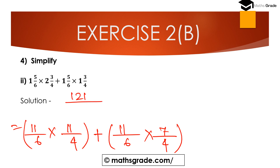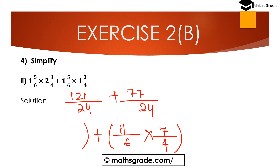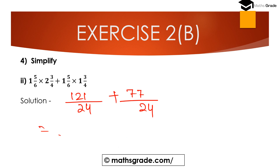Product of two fractions is product of the numerators divided by product of the denominators. So 11 multiplied with 11 is 121, and 6 multiplied with 4 denominator is 24, giving 121/24. Plus 11 multiplied with 7 is 77, plus 6 multiplied with 4 is 24. Now both fractions have equal denominator 24.